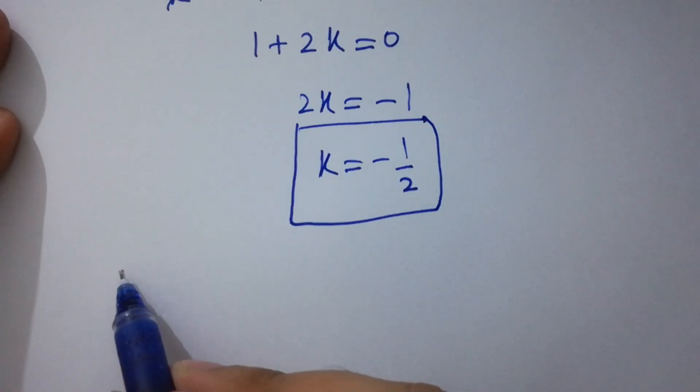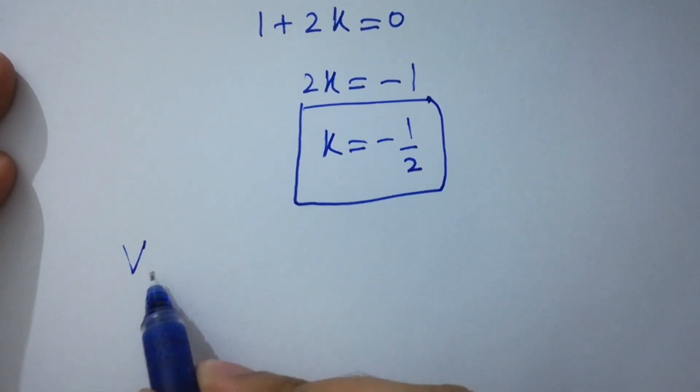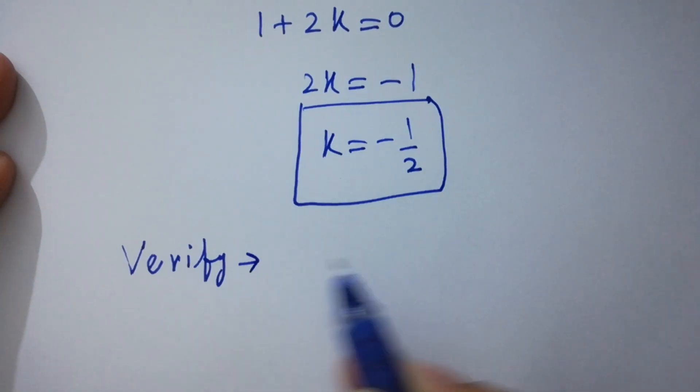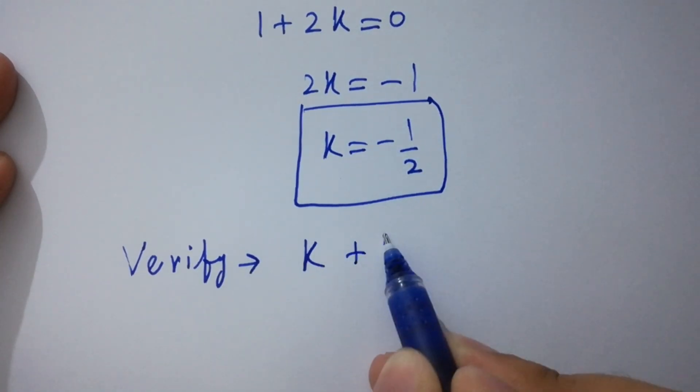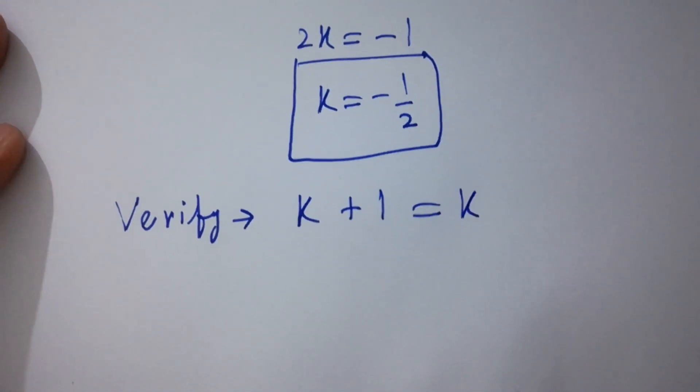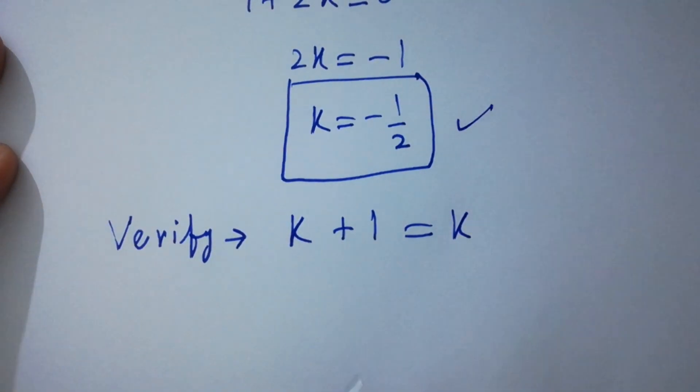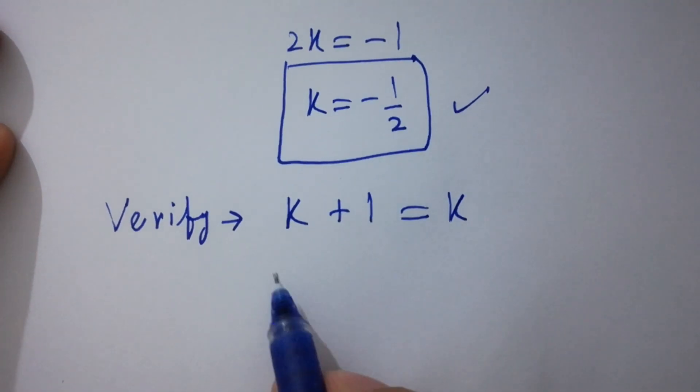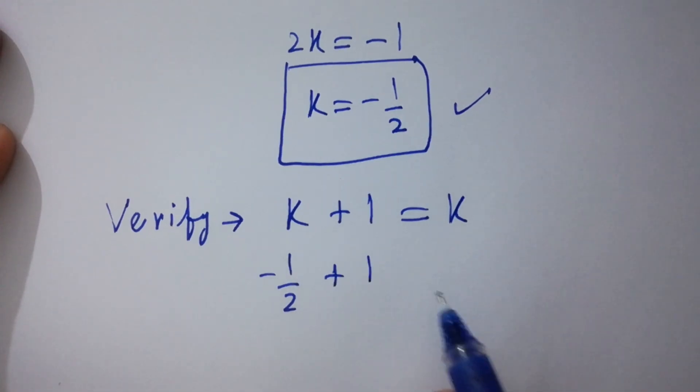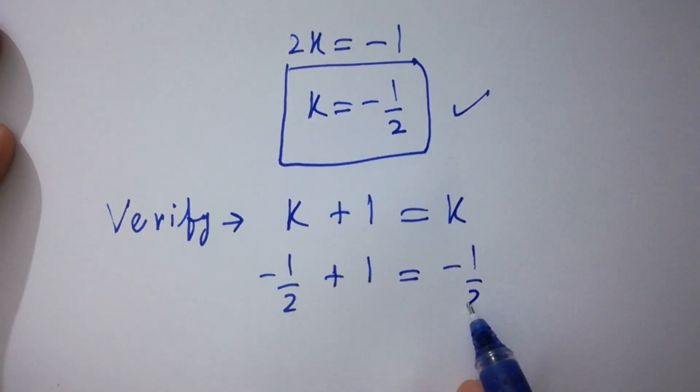Now, I am going to verify. k plus 1 equal to k. Put the value of k which is equal to minus 1 over 2. Minus 1 over 2 plus 1 equal to minus 1 over 2.